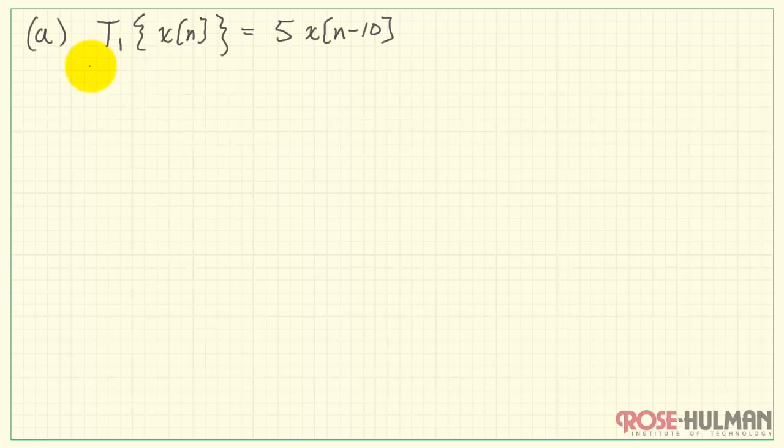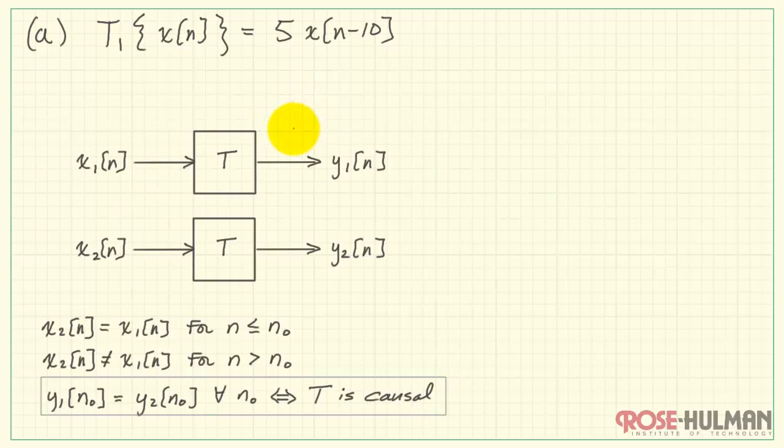All right, let's move on to the detailed solution for our first system. T1 is 5 times x of n minus 10. Here's our proof structure. We have our pair of inputs, pair of outputs.